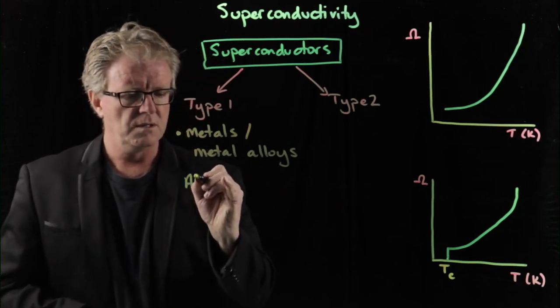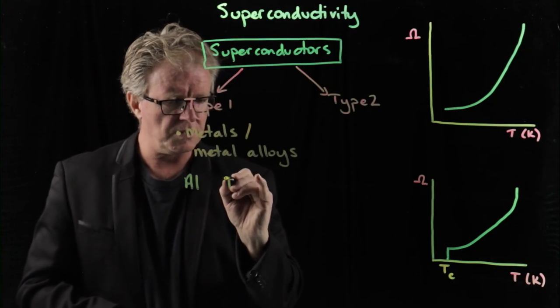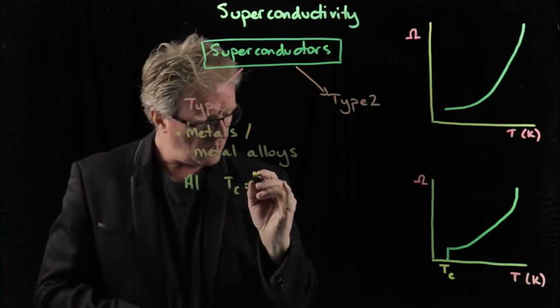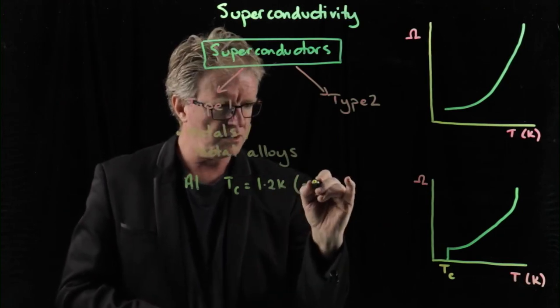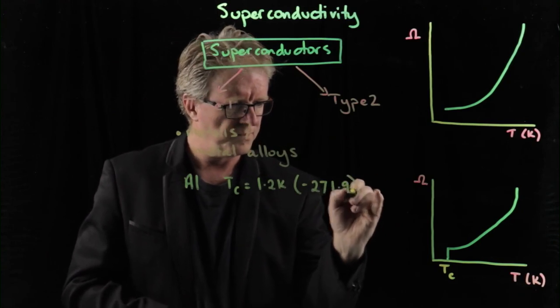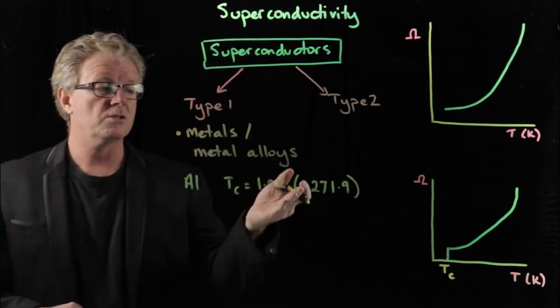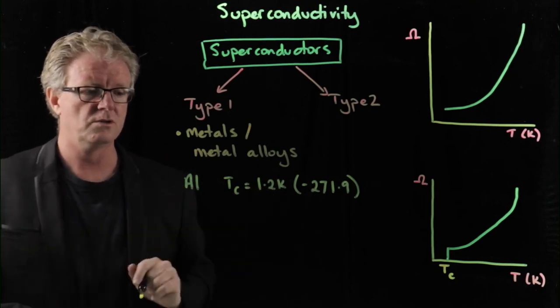Aluminum has a critical temperature of 1.2 Kelvin, which turns out to be minus 271.9. So absolute zero is minus 273.2, so it's very, very close. 1.2 Kelvin.